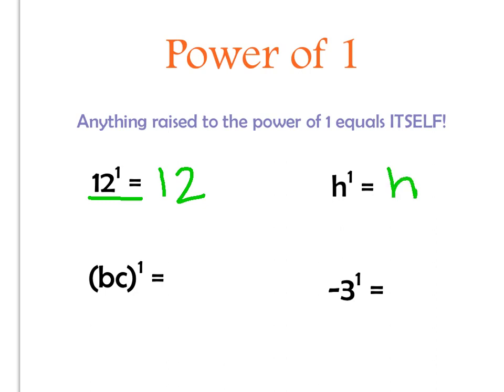If I have anything inside of the parentheses, bc to the power of 1, it's going to be the same. It's going to say that I have 1b and I have 1c. And if I have a negative number, it doesn't change anything. I have negative 3 to the power of 1 — I just have 1 negative 3, so my answer is negative 3.